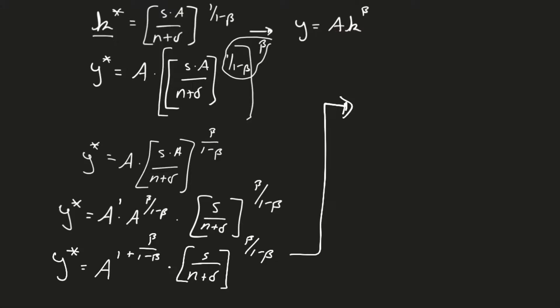I want to keep this on the same page, so let's go here. I'm going to say that this y star now is actually equal to a raised to the 1 minus beta over 1 minus beta plus beta over 1 minus beta. The reason that I'm doing that is I'm just taking 1, and I'm making it have a common denominator with the beta over 1 minus beta just so that way I can combine those terms.